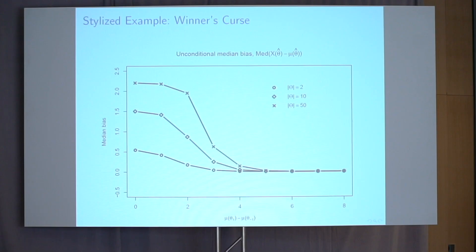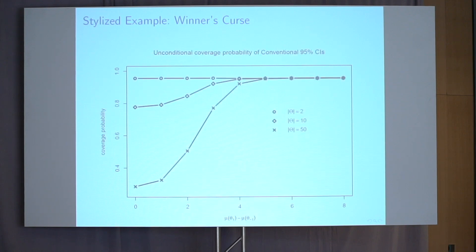We could also look at bias in other ways. Here I'm showing the median estimation error — we see that bias is increasing in the number of treatments considered and is worse when all treatments are of similar effectiveness. In addition to bias, we might care about coverage — how often does my usual confidence interval cover the true effectiveness of the recommended treatment? Interestingly, with just two treatments there's not a severe coverage problem, but with 10 or 50 treatments, coverage for a nominal 95% interval drops to about 80% and then to about 30% as the number of treatments increases.